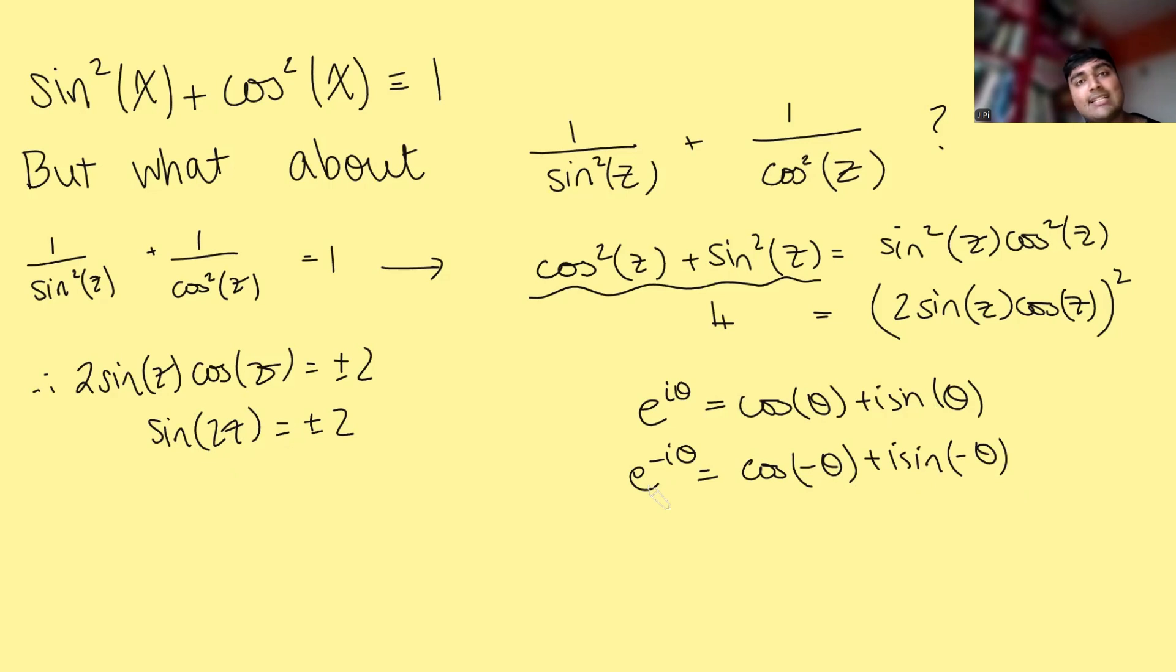But if you just look at a cos graph, it's symmetric about the y-axis. We call that an even function. So cos of minus theta is actually just the same as cos of theta. And in a similar way, sine is what we call an odd function. If I do sine of a negative number, that's the negative of what I would have got if I'd plugged in a positive number. So i sine of minus theta is just minus i sine of theta.